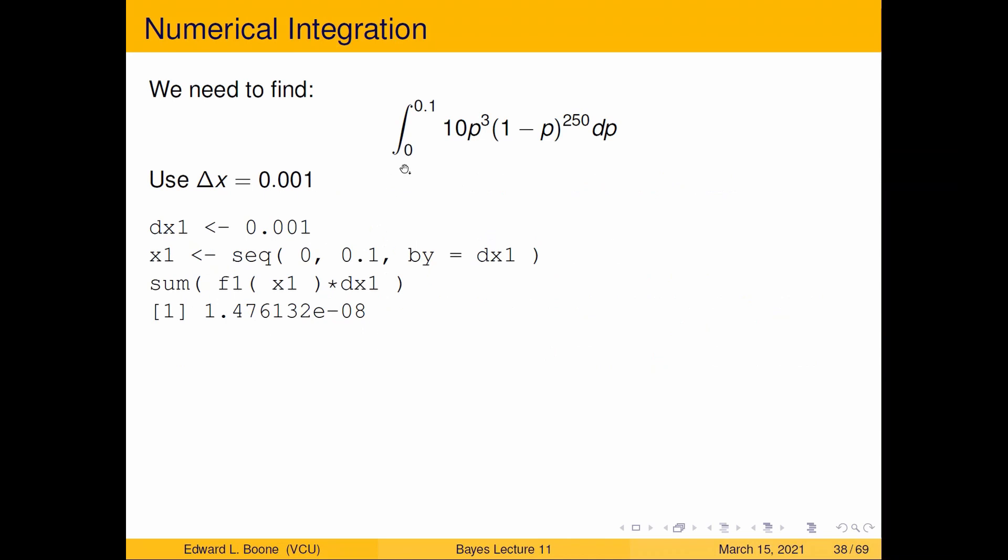Now we have to realize we're integrating this from 0 to 0.1. I'm going to start at a pretty small number, so dx1 here is 0.001. Our sequence goes from 0 to 0.1, which are limits of integration. F1 is the height of the function, dx is the width, so I'm going to multiply the height times the width and add it up. If I do this, I get 1.476 times 10 to the negative 8.